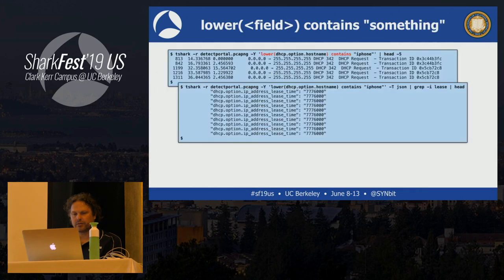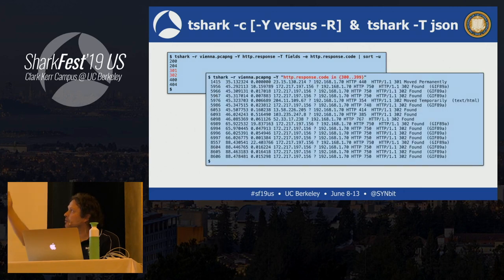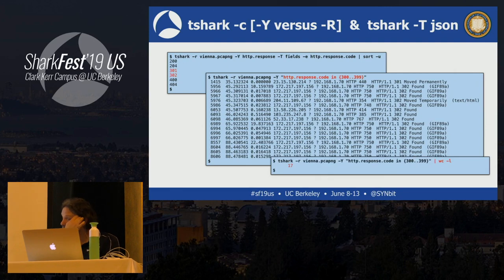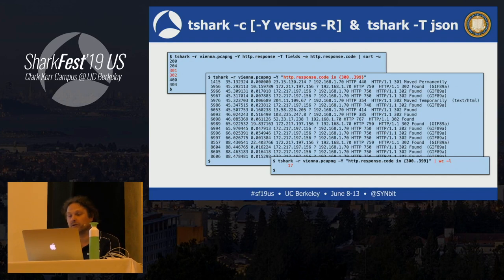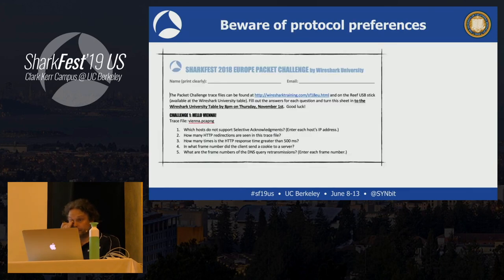The question was: how many HTTP redirections are seen? I could count by hand but that defeats the purpose. I'll pipe the output to 'wc -l', a utility that counts lines with the minus-L argument. Each line corresponds to a packet, so the line count equals the number of matching packets — that's the answer.